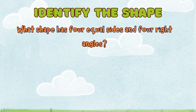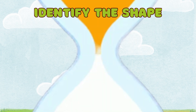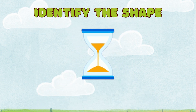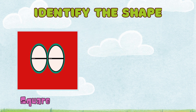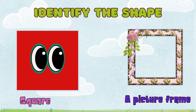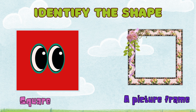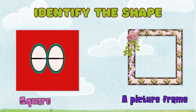What shape has 4 equal sides and 4 right angles? The answer is square. A square has 4 equal sides and 4 right angles. The shape of a picture frame is a square.